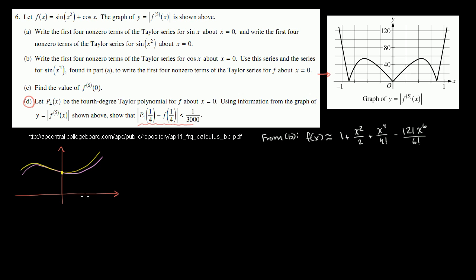If we say this is x equals 1/4, they're saying take the value of the polynomial at 1/4, subtract from that the value of the function at 1/4, and then take the absolute value. That gives us the absolute value of the error, or the absolute value of the remainder — the distance between the two functions there. And they want us to bound that distance.